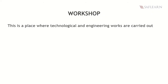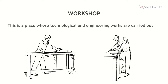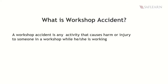In the context of basic technology, a workshop is a place where technological and engineering works are carried out. In more simple terms, a workshop is a place where goods are manufactured or repaired. A basic fact is that accidents can happen anywhere and anytime, even in workshops too. A workshop accident is any activity that causes harm or injury to someone in a workshop while he or she is working.